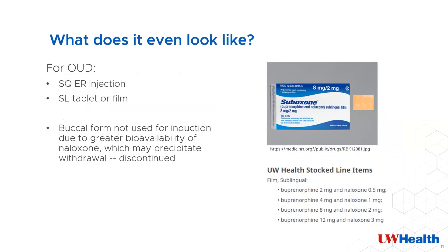It is available as a subcutaneous injection and a sublingual tablet and film. I have a picture of what the film looks like, as I'm always interested to see what our medications look like in real life, having had no central pharmacy experience during pharmacy school. I've also included a screenshot of what is available on formulary for us at UW Health. The buccal film has been discontinued in the United States for more than a year and was not preferred for induction anyway because the naloxone component had greater bioavailability and there was a risk of precipitating withdrawal with its use.